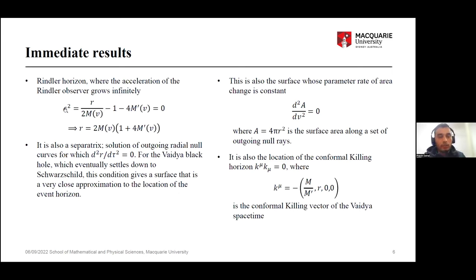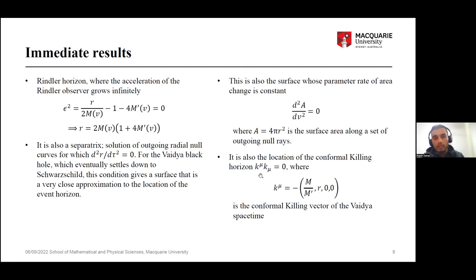From this transformation we can immediately identify the Rindler horizon. The Rindler horizon is the surface for which epsilon equals zero. This surface has special properties: it is also the surface for which the second derivative vanishes, giving the event horizon; it is also the surface for which the expansion of outgoing null rays A vanishes, giving the trapping horizon; and it is also the conformal Killing horizon of the Vaidya spacetime. So the Rindler horizon coincides with several known horizons found in the literature.